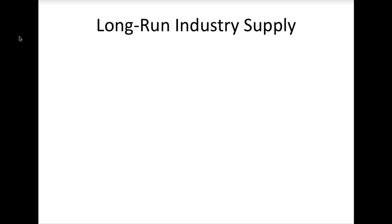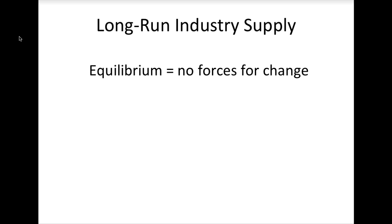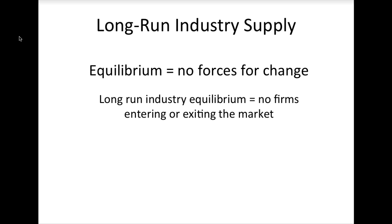In general, you can think of a state of equilibrium as a state in which nothing is changing. In the case of a competitive market, long-run equilibrium for the industry is defined as a situation in which no firms are entering or exiting the market.